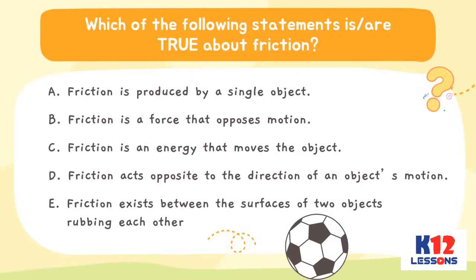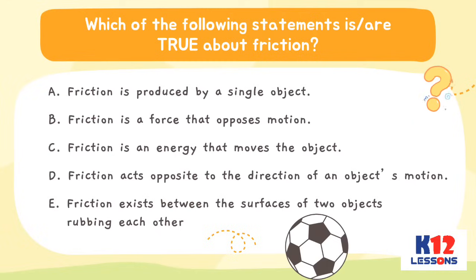Which of the following statements are true about friction? A. Friction is produced by a single object. B. Friction is a force that opposes motion. C. Friction is an energy that moves the object. D. Friction acts opposite to the direction of an object's motion. E. Friction exists between the surfaces of two objects rubbing against each other.